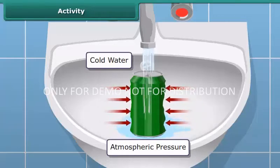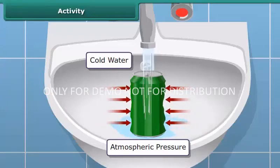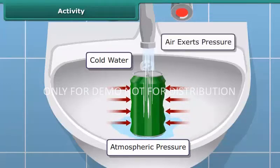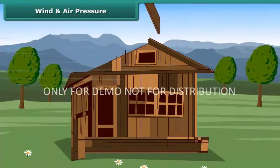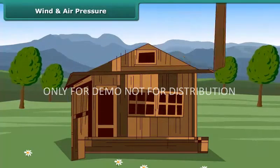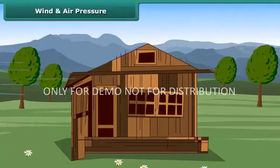As water is poured over the can, some steam in the can condenses into water, which reduces the amount of air inside the can. That means air pressure inside the can decreases. Then the pressure exerted by the air from outside causes the can to get distorted. By this activity you learned that air exerts pressure. High-speed winds can blow away the weak roofs off buildings; high-speed winds are accompanied by reduced air pressure.